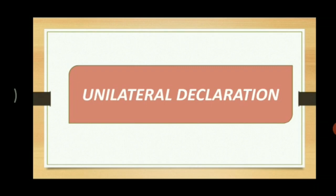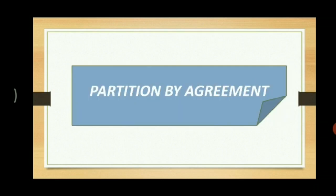Then the next mode is partition by agreement. It says that if all the co-parceners decide to destruct their joint status, it is called partition by agreement. This need not be in writing. From the date of signing the agreement, the severance of status takes place. If all the co-parceners take this decision that we need a partition, then we call that mode partition by agreement.